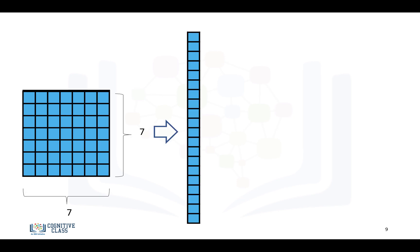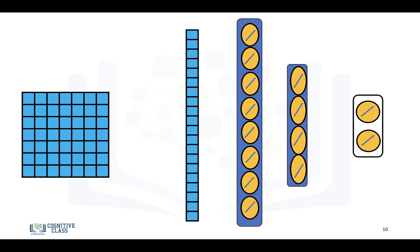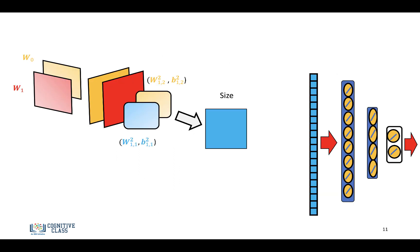And remember, this is just an activation value, and we're going to use this activation value as an input to a fully connected layer. So, this has two hidden layers, but for our actual example, we'll only require an output layer. So, here's the final diagram.